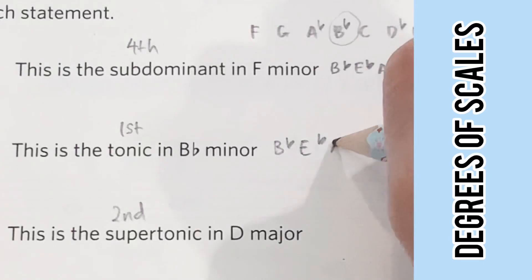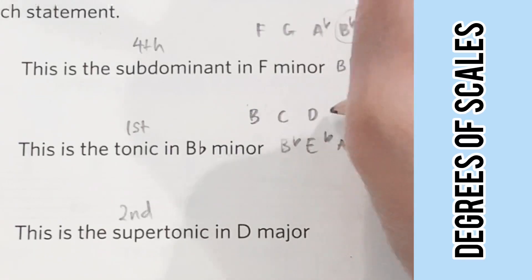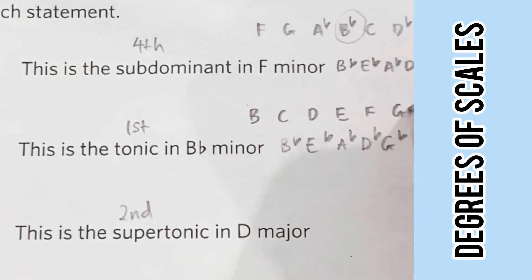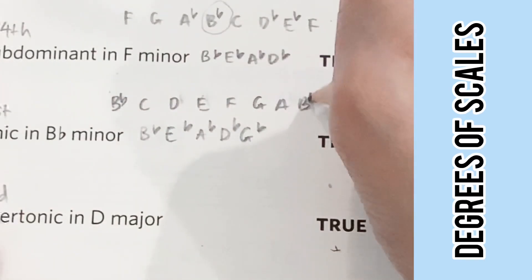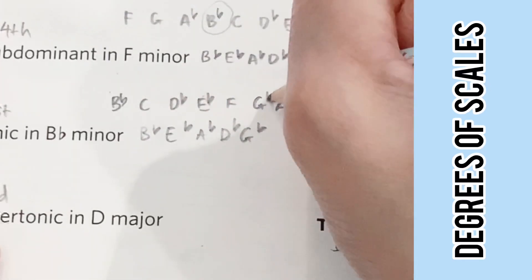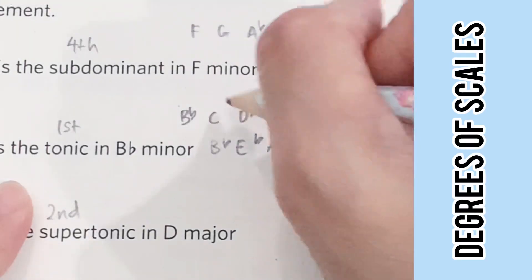Moving on, we have B flat minor. The key signatures would be B flat, E flat, A flat, D flat, and G flat. Scale: B, C, D, E, F, G, A, B.